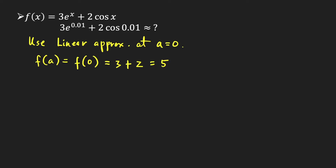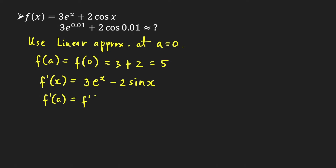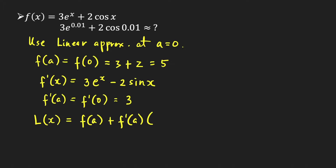Now let's find the slope of the tangent line at a. We have f prime of x equal to 3e to the x minus 2 sine x. So f prime of a equals f prime of 0, which is 3 times e raised to 0 minus 2 times sine of 0, giving us 3. Our linearization at a equals 0 is L(x) = f(a) + f'(a)(x − a) = 5 + 3 times (x minus 0), which simplifies to L(x) = 3x + 5.